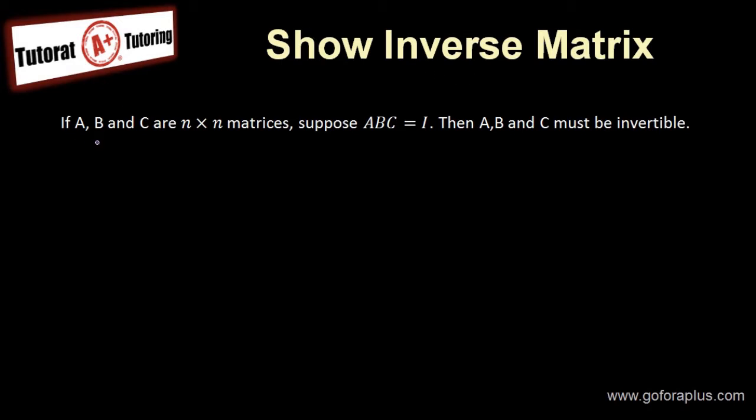In the question here, it's given that A, B, and C are all square matrices. Suppose that ABC equals to I, the identity matrix, then we need to show that A, B, and C must be invertible.